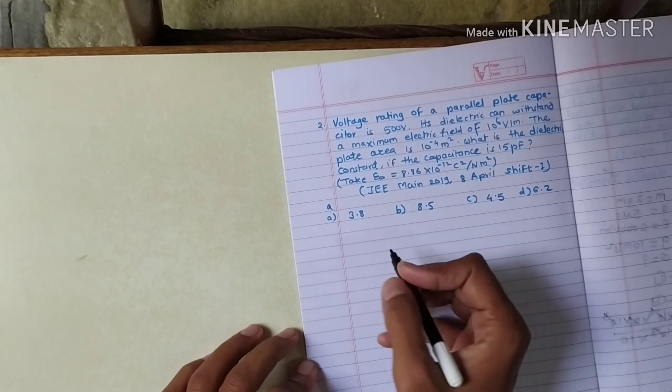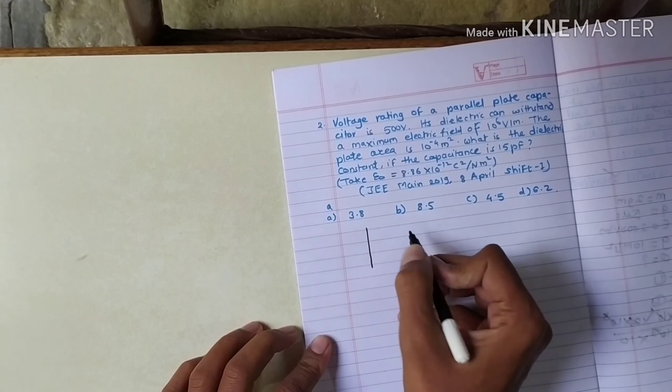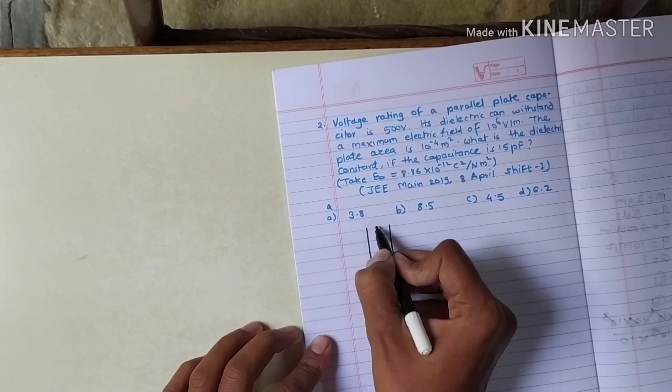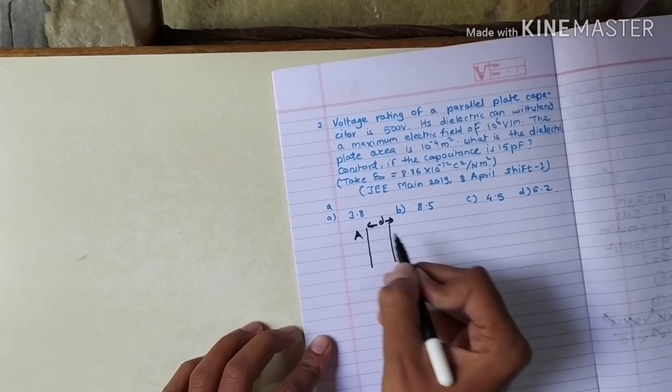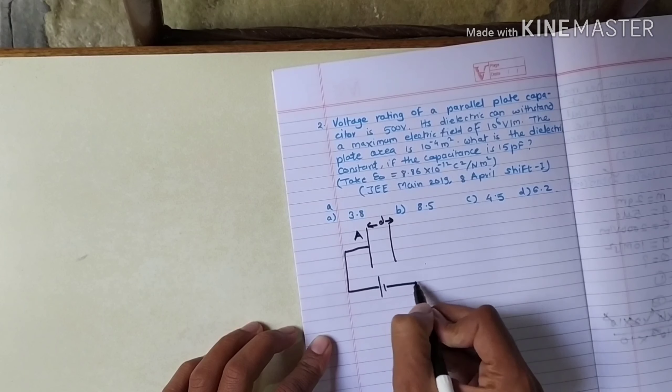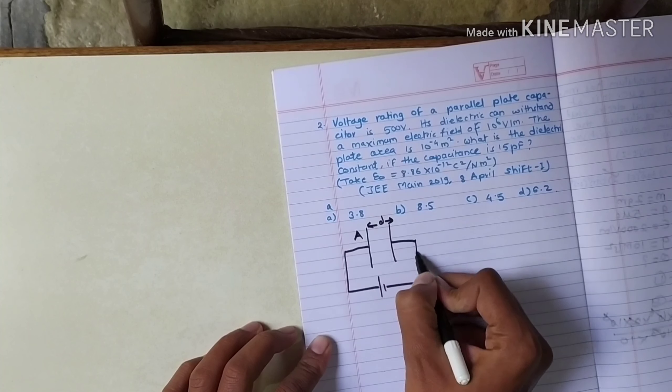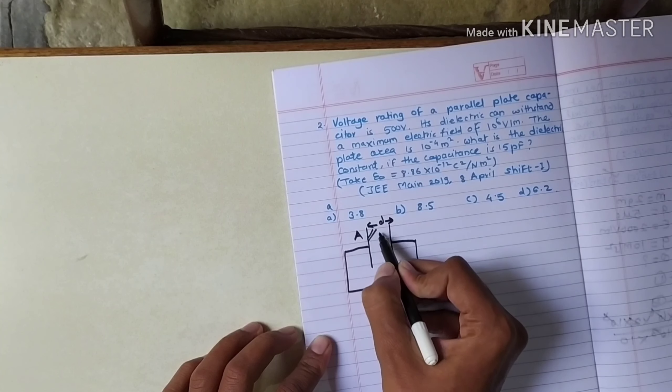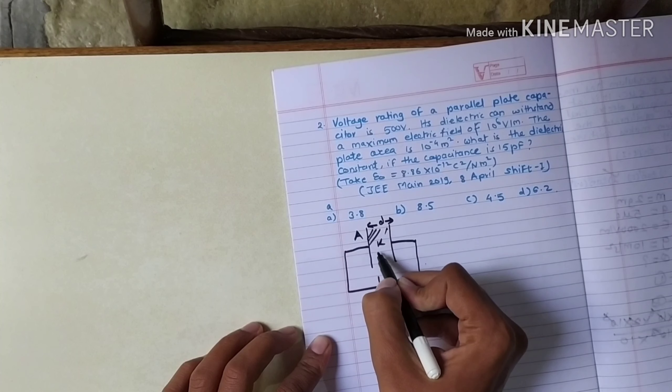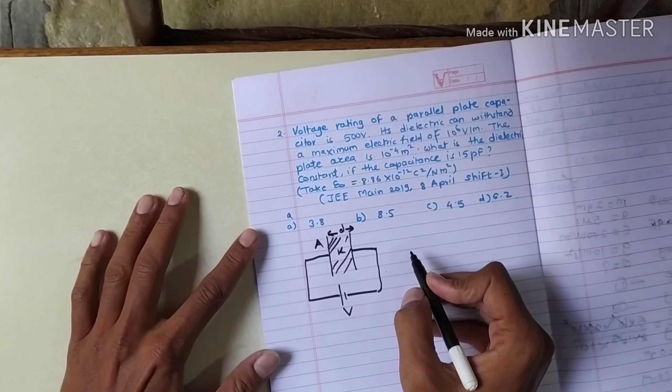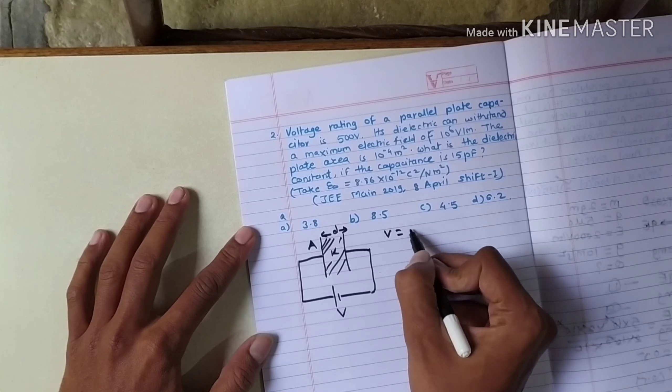First of all, we understand the question. There is a capacitor. The distance between the plates we need to find out if the area of the plate is given. This capacitor is connected to a battery. The battery has given us the potential V. And there is an electric field between the plates of this capacitor. Let us write down what is given in the question.